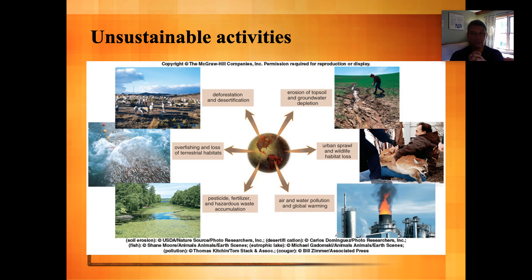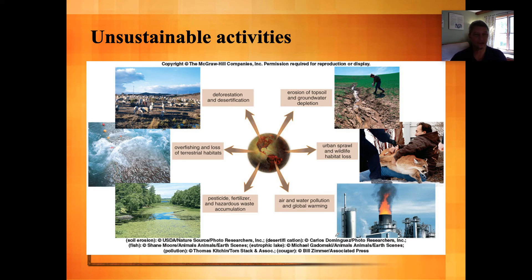Here is a picture of some of the dangerous things going on around the world. Deforestation can lead to desertification, the erosion of topsoil, and the depletion of groundwater. Urban sprawl, especially the buildup of suburbs over the last century, leads to habitat loss for natural populations. Air pollution, water pollution, global warming, the use of fertilizers, pesticides, and hazardous wastes can lead to eutrophication of ponds and lakes, and overfishing causes loss of terrestrial and aquatic habitat. All of these things are unsustainable — we have to slow them down, stop them, and reverse some of the ill effects caused over the last few hundred years.